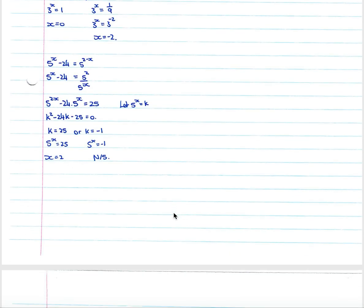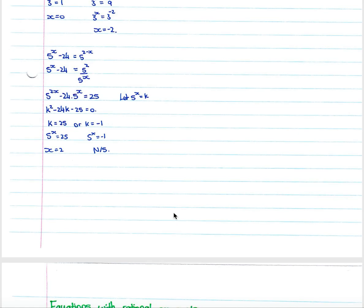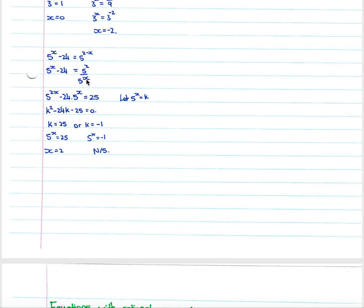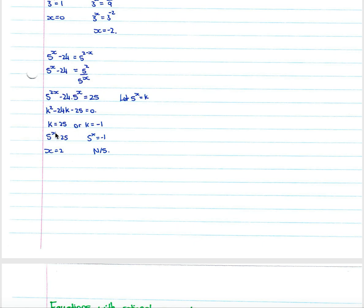When an equation has a denominator, multiply through by five to the x to eliminate it, giving five to the two x minus 24 times five to the x equals 25. Let five to the x equal k, giving k squared minus 24k minus 25 equals zero. We get k equals 25 or k equals negative one. Since five to an exponent cannot be negative one, that gives no solution. For k equals 25, we write five to the x equals five squared and compare exponents, giving x equals two.